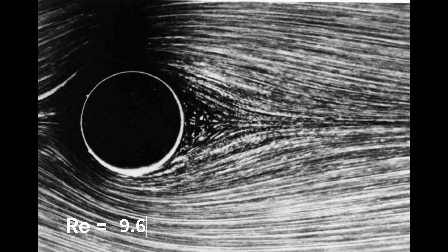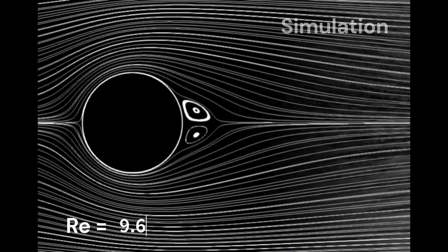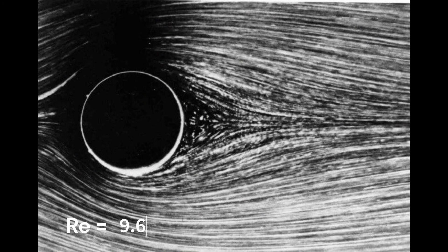Past a Reynolds number of around four, the flow detaches from the back of the cylinder, and a small separation bubble is formed.